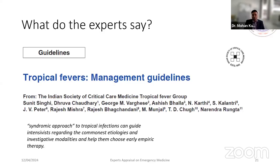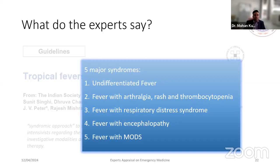Experts made guidelines using a syndromic approach to tropical fever — rather than going disease by disease — to guide physicians in choosing investigations and empirical therapy early. Five major syndromes were identified: undifferentiated fever; fever with arthralgias and thrombocytopenia; fever with ARDS; fever with CNS involvement; and fever with multi-organ dysfunction syndrome.